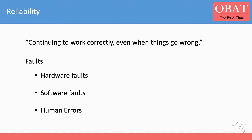But why do things go wrong? Things may go wrong in software due to hardware failures, software faults, or maybe human error. Let's talk about these in detail.